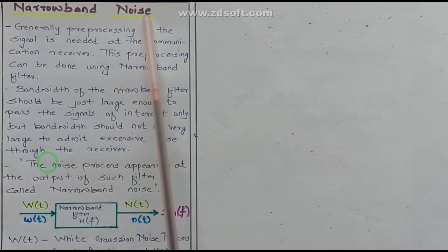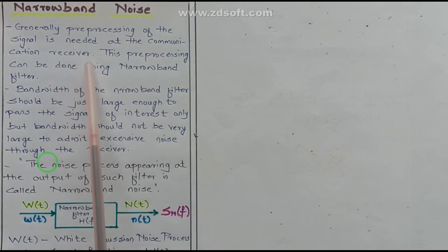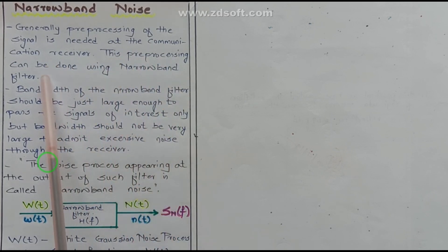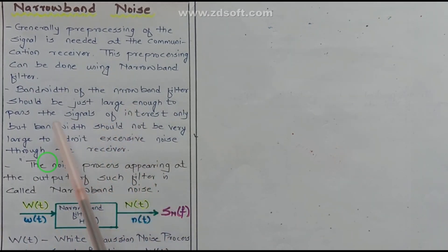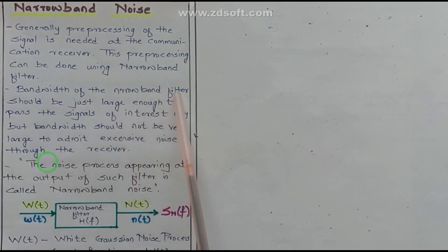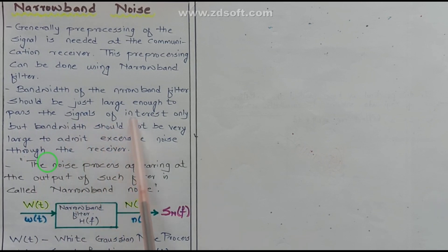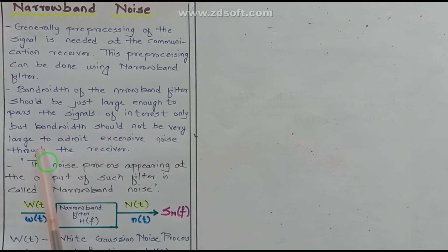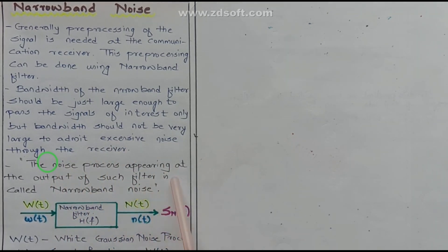Generally, pre-processing of the signal is needed at the communication receiver, and this pre-processing can be done using a narrow band filter. The bandwidth of this narrow band filter should be just large enough to pass the signals of interest only, but not so large as to admit excessive noise through the receiver. The noise process appearing at the output of such a filter is called narrow band noise.